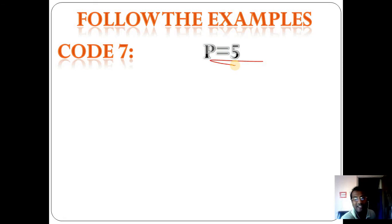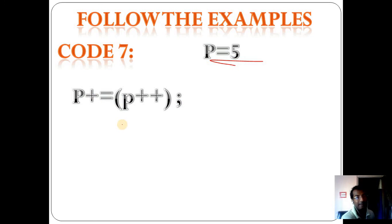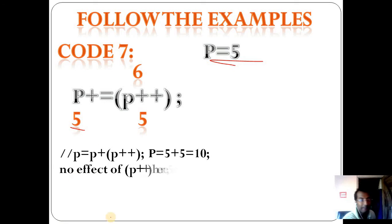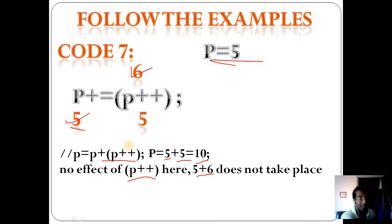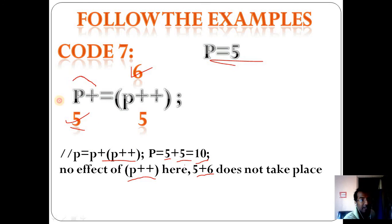Code number 7: p equals 5. The statement is p += p++. We break it as p equals p plus p++. First p equals 5, then increment by 1 so p becomes 6. We write it as p equals p plus p++, which means 5 plus 5 equals 10. The p++ increment of 6 has no additional effect here. So both values 6 and 5 are considered, and the result does not take place beyond that.